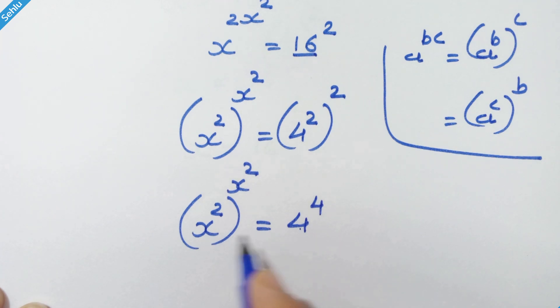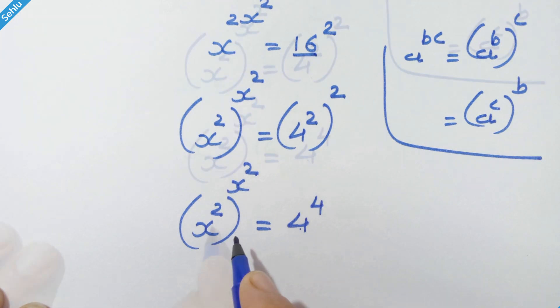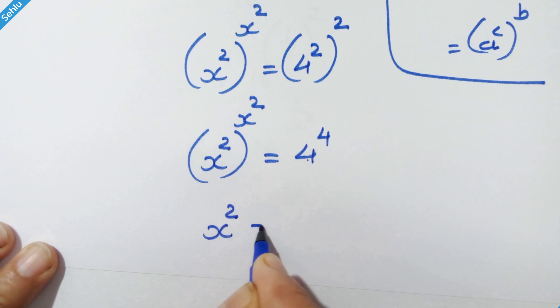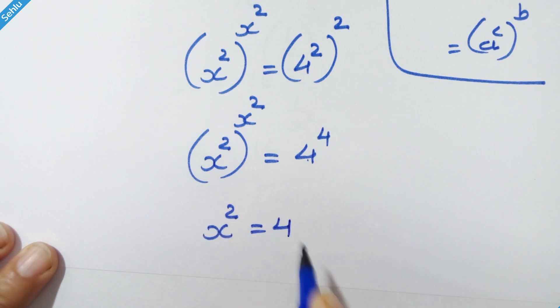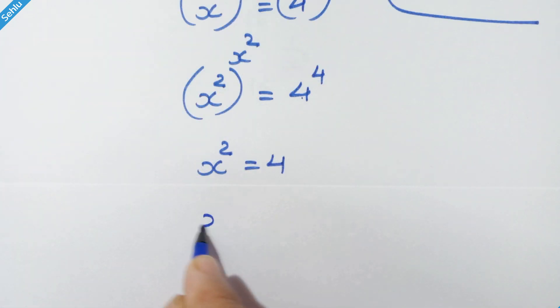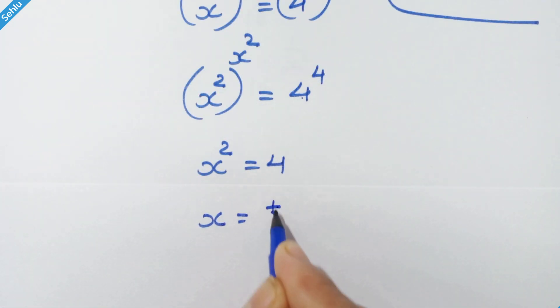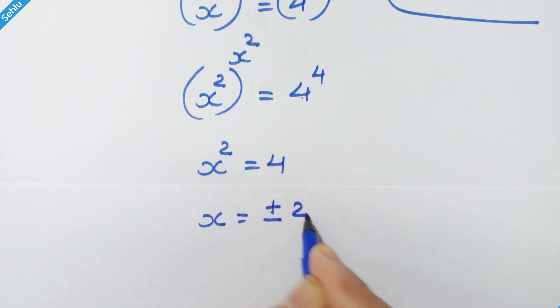We have the same base and exponent on both sides, so we can equate: x square is equal to 4. Therefore x is equal to plus or minus 2.